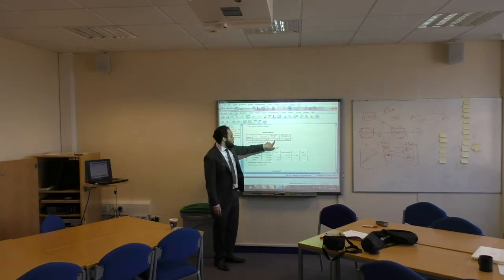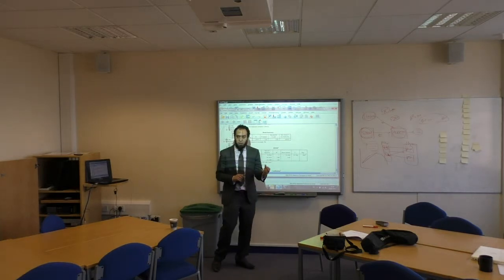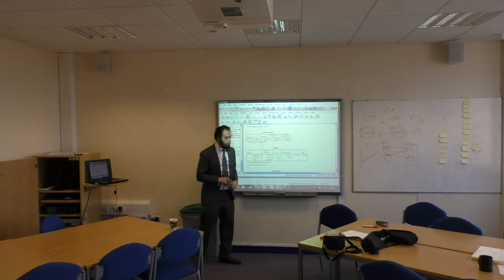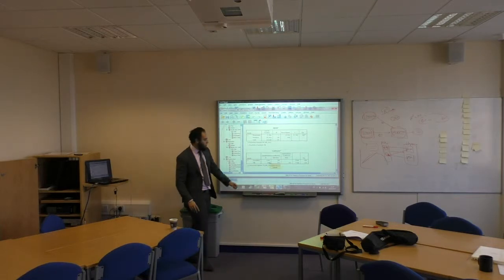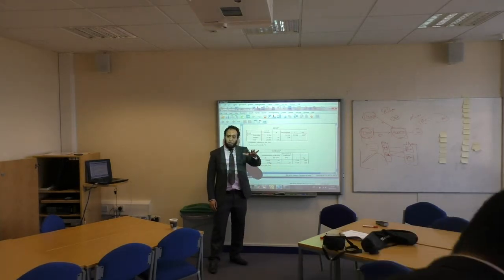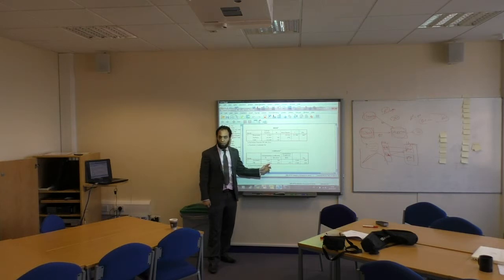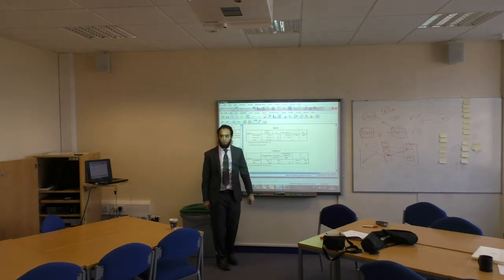The R-square is 22%, which means project management affects project management success by 22%; 78% we don't know. Only 22% of why project management success happens is explained by implementing project management. The beta is roughly 0.5 — on a five-point scale, this means the more you do in project management, the higher the impact on project management success. So you have R-square, significance, and beta — three numbers to report.